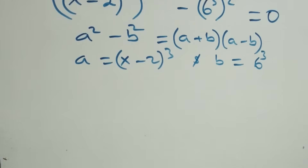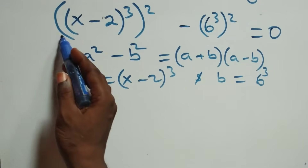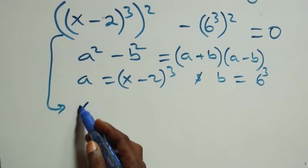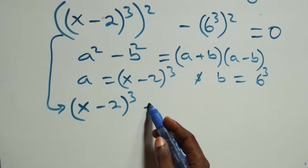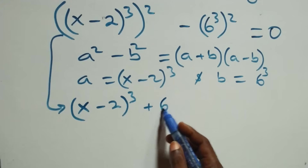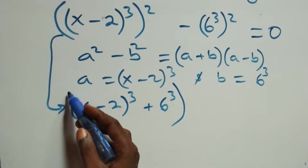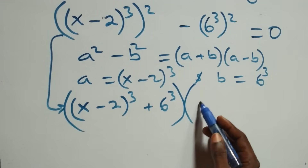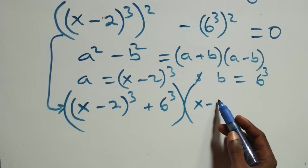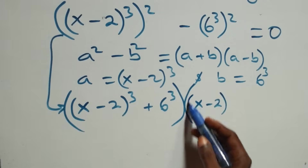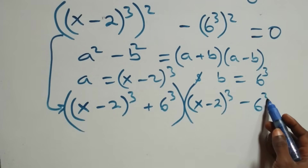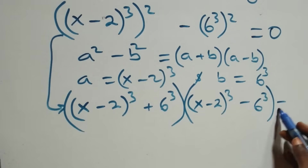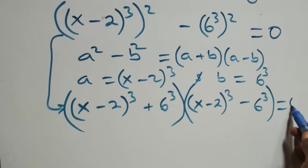Applying this, what we have here becomes: x minus two raised to power three, plus six raised to power three, in bracket, multiplied by open bracket x minus two raised to power three, minus six raised to power three, close bracket, then equals to zero.